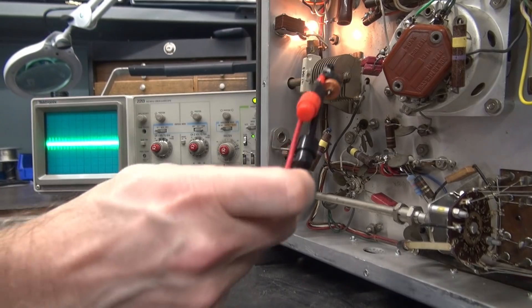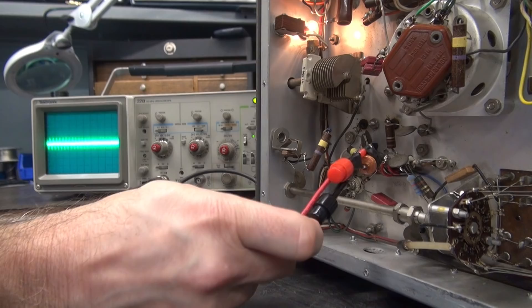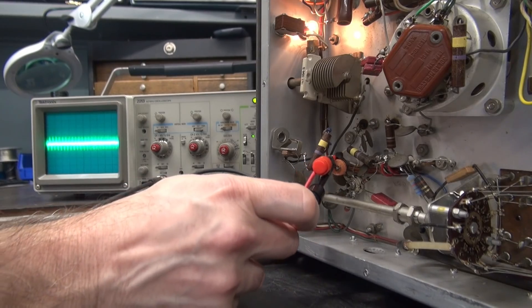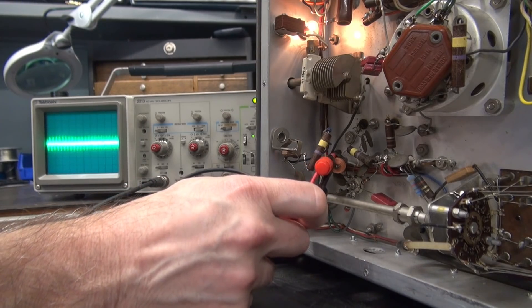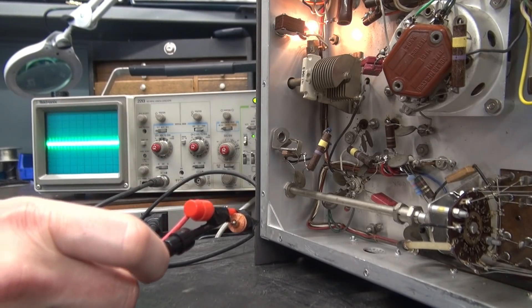Take it away. So I believe that we're seeing some noise, some stray AC, from the 6AQ5 multiplier tube. Okay?